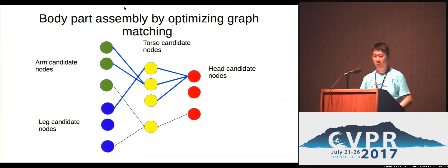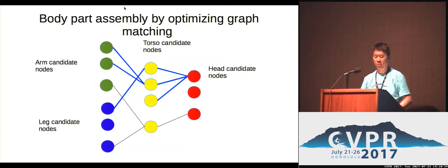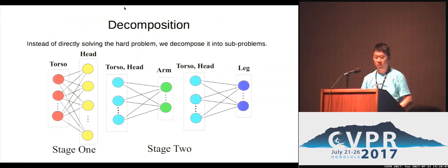This looks like a feasible solution. However, because the graph is going to be huge — we have lots of region candidates and a lot of connections between them — if we directly solve this problem, it's going to be quite slow. So instead of directly solving this hard problem, we decompose it into small graphs. Each of these small graphs shares exactly the same structure, so we can use exactly the same optimization algorithm to tackle this problem.